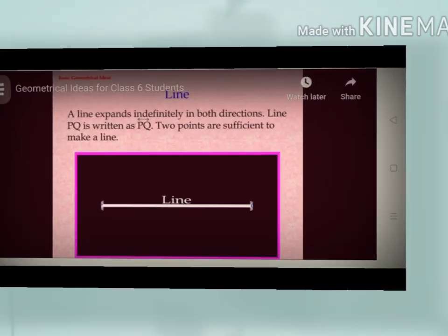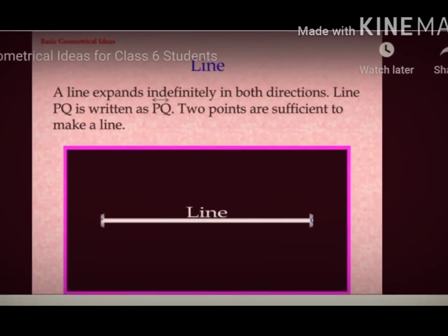Students, see the next one. The next one is Line. So what is a line? A line expands indefinitely in both directions. It does not have any length. Line PQ is written as line PQ. Two points are sufficient to make a line. It does not have any measurement. Line segment has measurement, but line is not having.